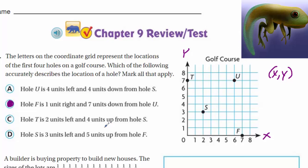For answer C, it says hole T is two units left and four units up from hole S. Is it two units left? Yes — one, two. And it also says four units up from hole S: one, two, three, four — it is! Oh my goodness, two in a row. C, you are a winner.